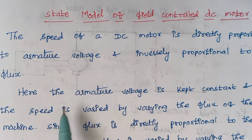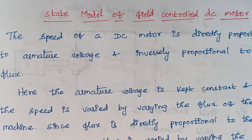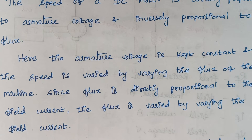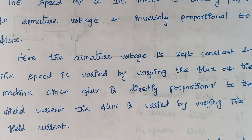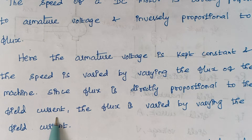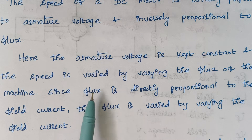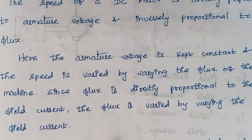In field controlled DC motors, the armature voltage is always kept constant. Therefore, the speed is varied by varying the flux. The flux is directly proportional to the field current. So whenever we need to change the speed of the DC motor, we can change it by varying the field current, because field current is related to flux, and flux is related to speed.